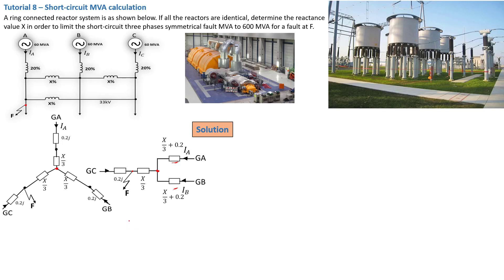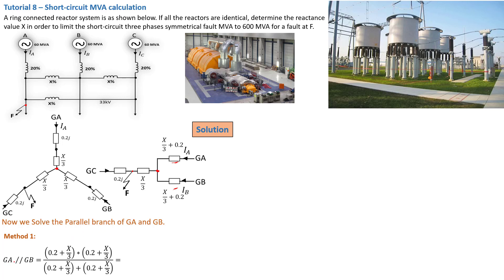That is where we left off from the previous tutorial. There are basically two methods to solve this. This is simple algebra that you have to implement. Method 1 for solving this parallel branch is basically to multiply — the parallel of GA and GB will be (0.2 + X/3), that one expression times the same expression at the bottom, divided by the sum of the two expressions. From here you have to do some basic algebra manipulation.